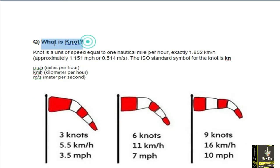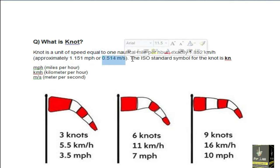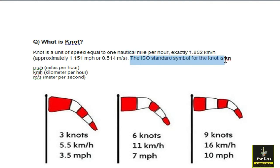What is a knot? A knot is a unit of speed equal to one nautical mile per hour, exactly 1.852 kilometers per hour, approximately 1.151 miles per hour, or 0.514 meters per second. The ISO standard symbol of the knot is kn.